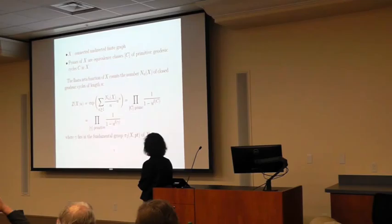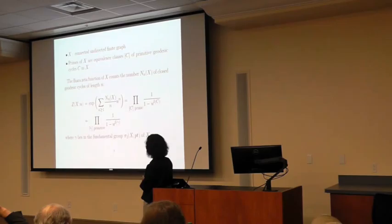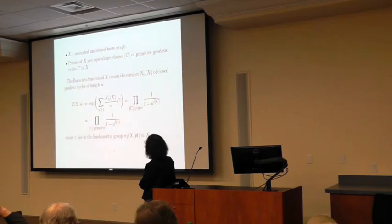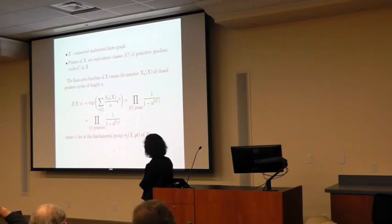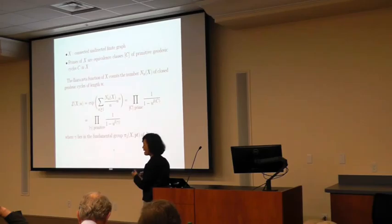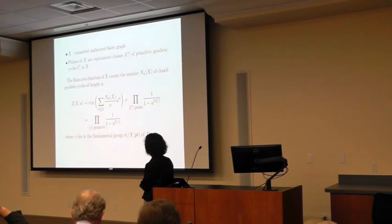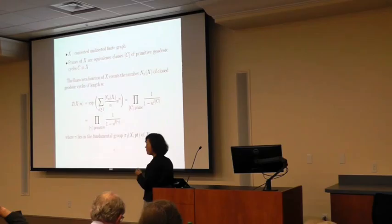Let X be a connected, undirected, finite graph. Just as before, the primes of the graph are the equivalence classes of primitive geodesic cycles. Ihara's zeta function associated to a finite graph is the infinite product over the primes of 1 over (1 minus u raised to the length of the prime). This infinite product can be expressed as a power series where each term counts the number of closed geodesic paths of a given length. This definition is very much like the zeta function for curves over finite fields — it is exactly the same form. Also, this product over primes can be expressed as a product over primitive elements of the fundamental group of the graph.